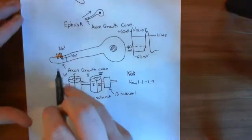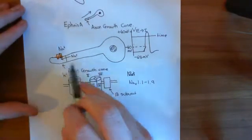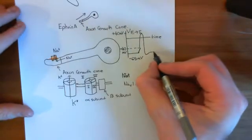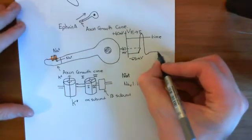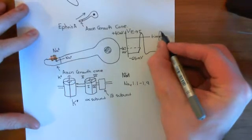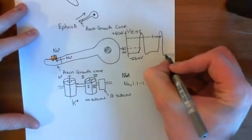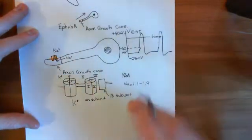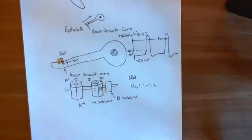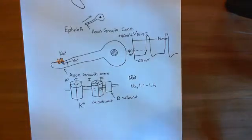What's going to happen across this membrane is, because this neuron is continually firing, what you're going to get is a continuous trail of action potentials. So you're going to get this happening multiple times in a row. You've got this pulsatility of electrical activity happening across the membrane of this axon growth cone.